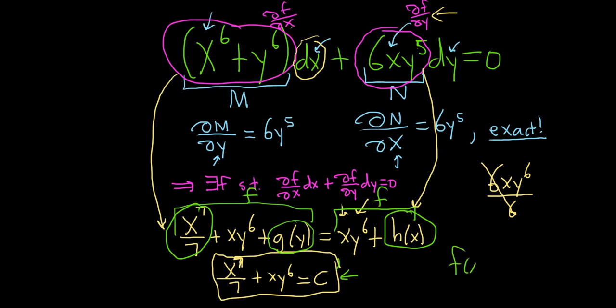And the reason you set it equal to C is because originally, the construction of this method, the function that we start with, always has this form, F of X, Y equals C. So it's just something that comes from the construction of the method. I hope this video has been helpful.